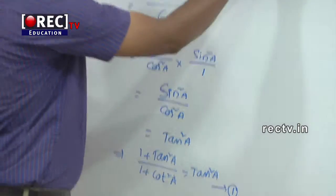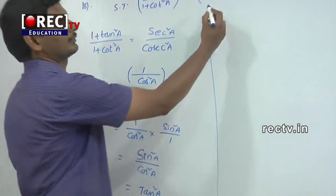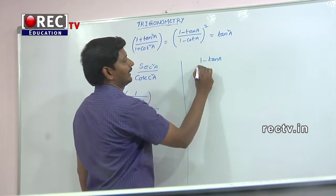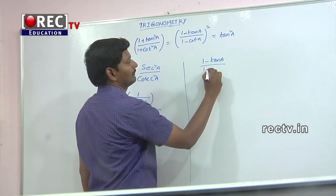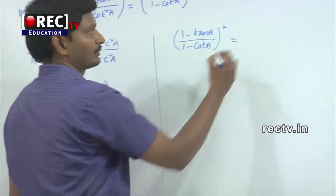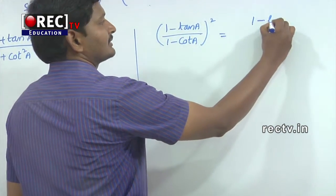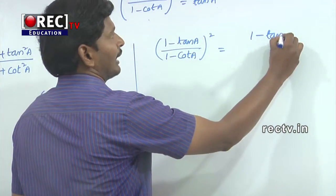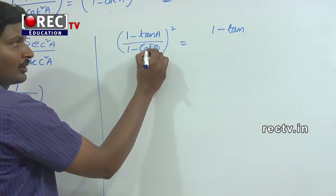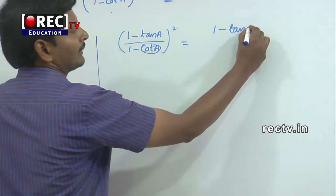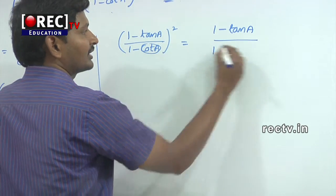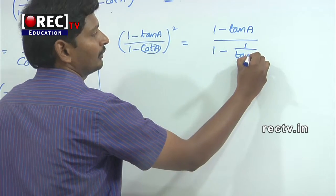Next step: we have to consider the second part — ((1 - tan a) / (1 - cot a))². We have to convert the total expression into terms of tan, meaning we convert cot a into tan a. So 1 - cot a becomes 1 - (1/tan a).